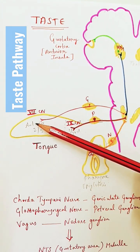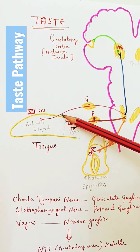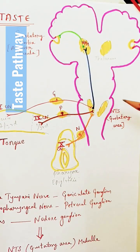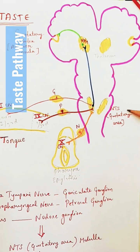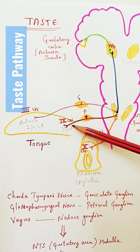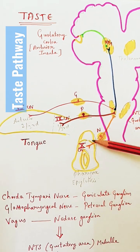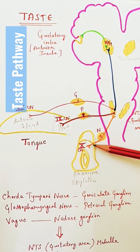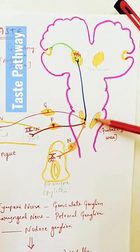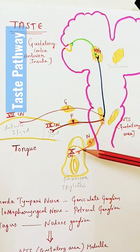From the anterior two-thirds of the tongue, the seventh cranial nerve — the chorda tympani branch of the seventh cranial nerve — carries the taste sensation to the nucleus tractus solitarius. Similarly, from the posterior one-third of the tongue, it is the glossopharyngeal nerve. From the pharynx, epiglottis, and palate, it is the vagus nerve — the tenth cranial nerve — that carries taste sensation to the nucleus tractus solitarius.